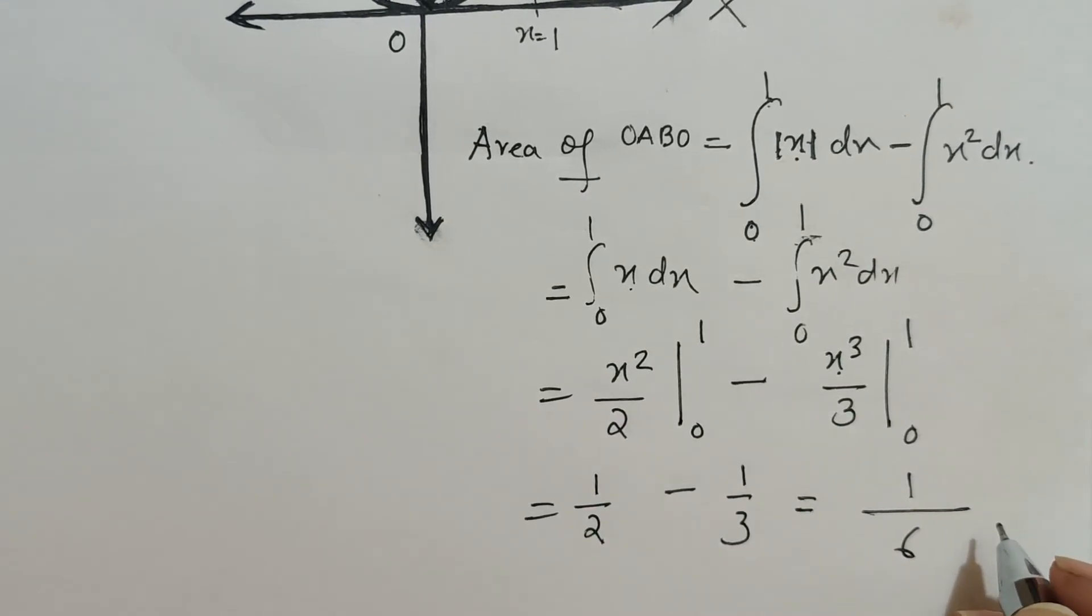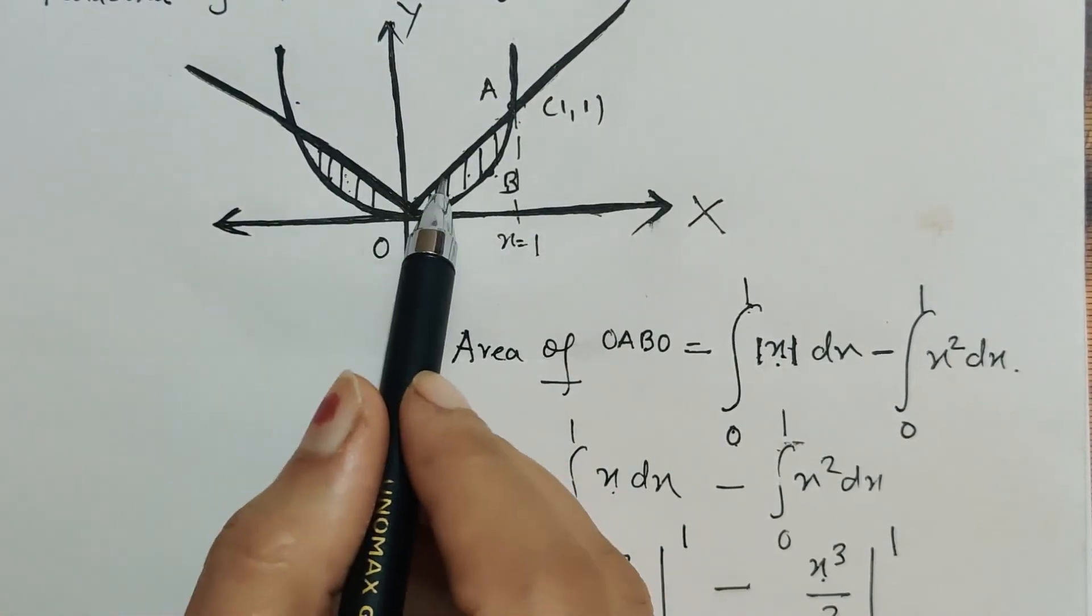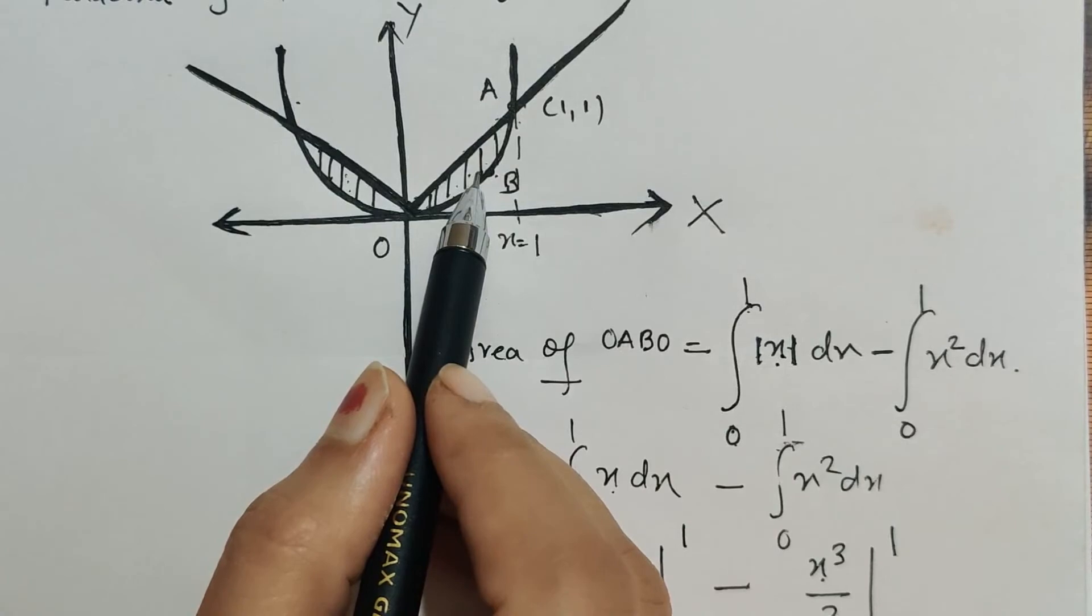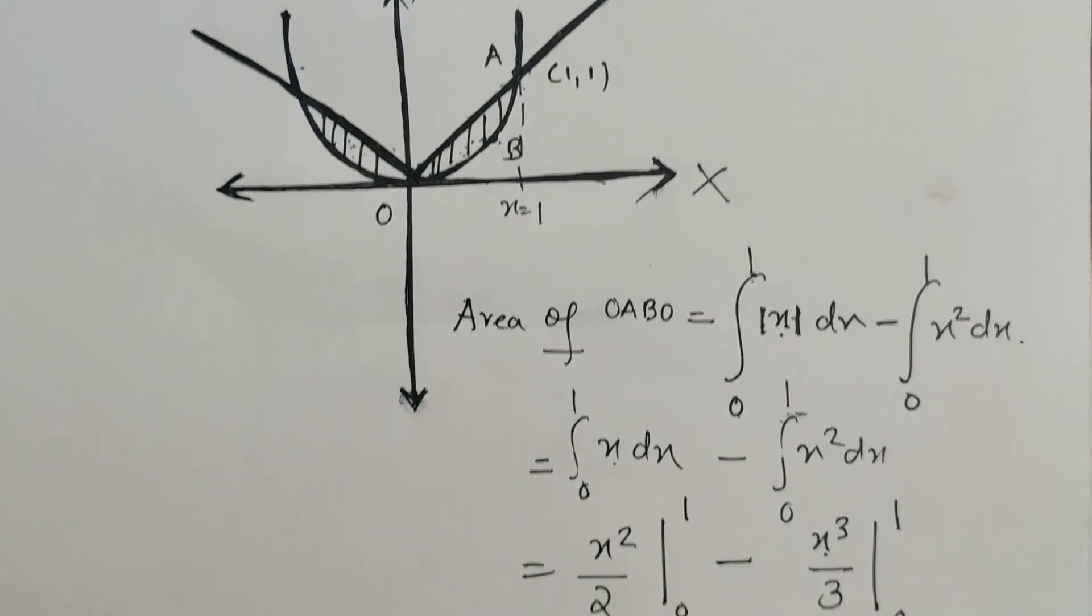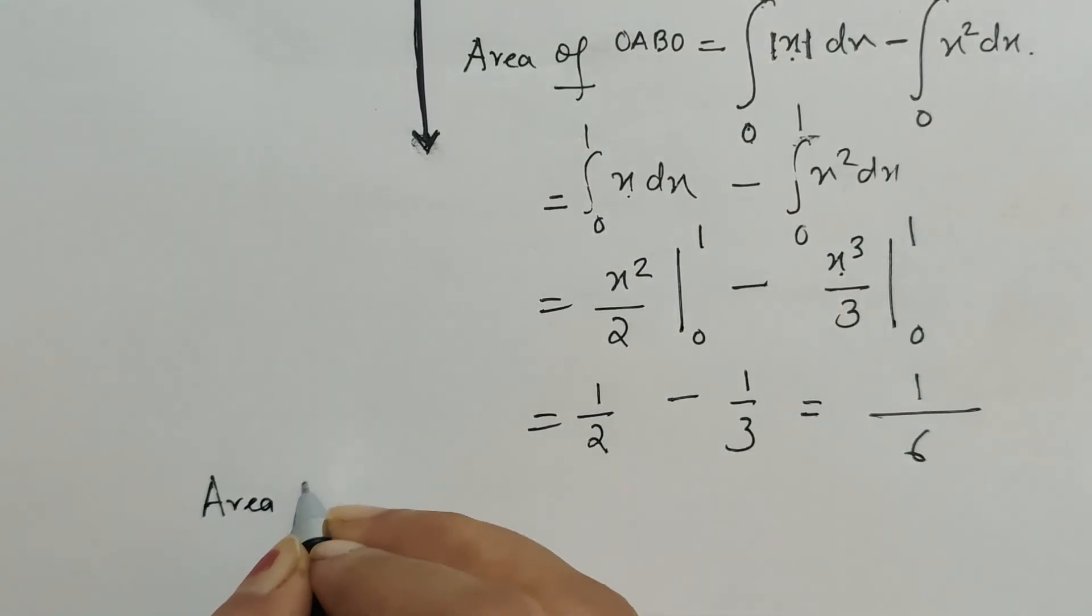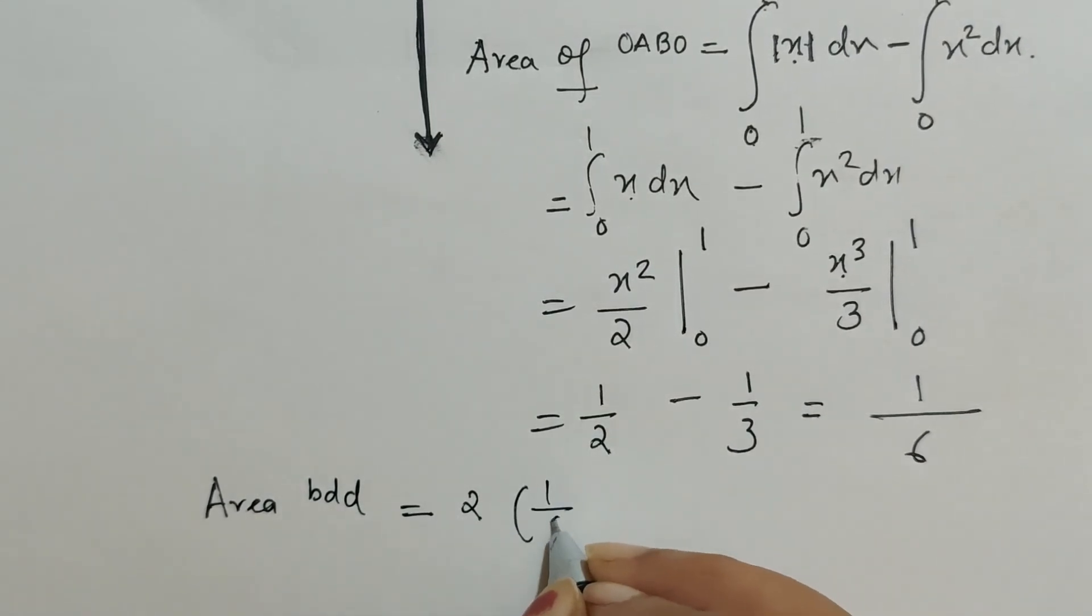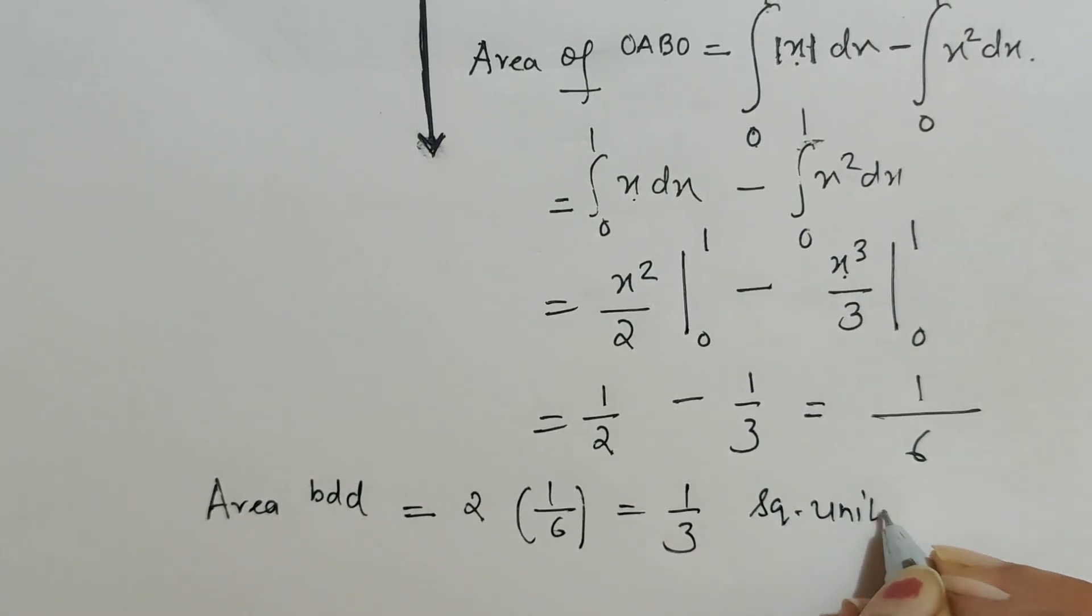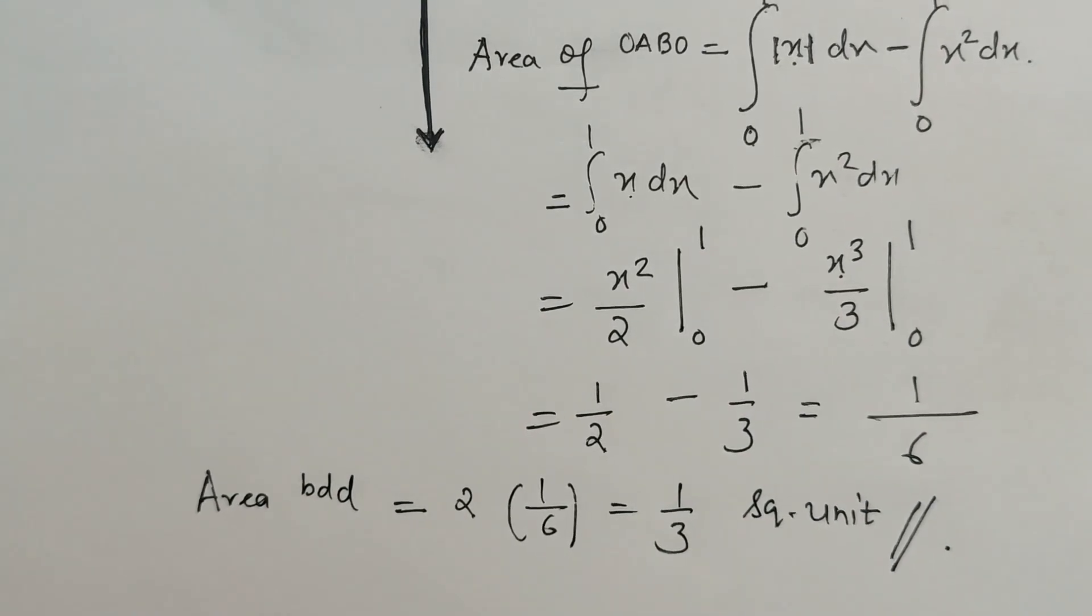Now next, as I said, we are actually finding area of this as well as this, and as both are symmetric, we will simply multiply the area of this portion by 2, which will give us the area of these two regions together. So area bounded is equal to twice of 1 by 6, which is 1 upon 3 square unit, because area is measured in square units. So the answer is this. Thank you.